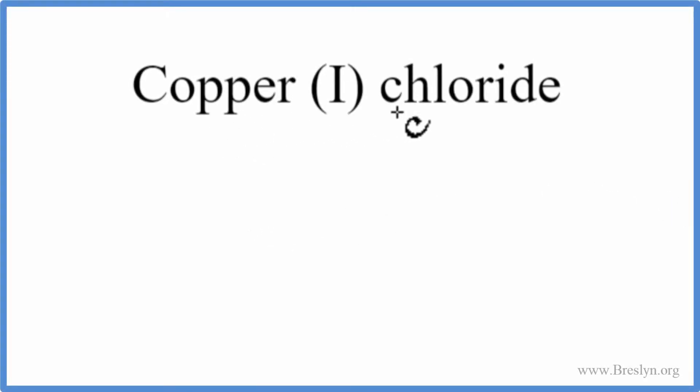To write the formula for copper one chloride, we go to the periodic table and we look up copper. That has an element symbol of Cu, and then chloride, we're looking for chlorine, that's Cl. So we have copper and chlorine.